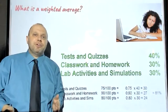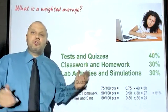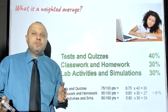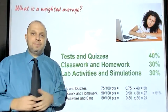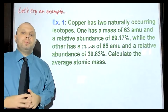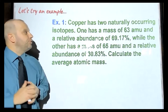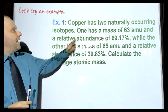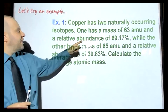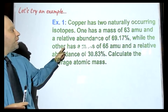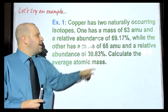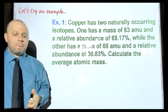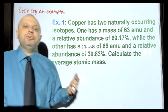What we're going to do next is find a weighted average for isotopes instead of grades. Let's take a look at our first problem. Copper has two naturally occurring isotopes: one has a mass of 63 AMU, and the other has a mass of 65 AMU and a relative abundance of 30.83%.